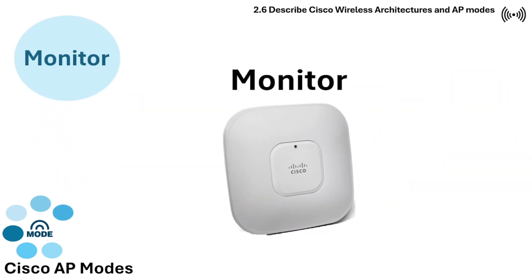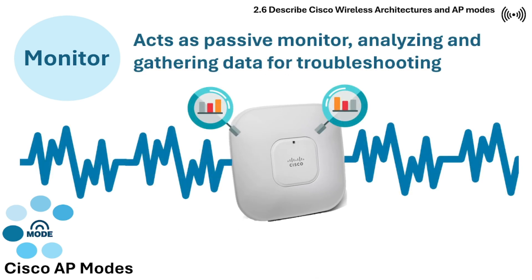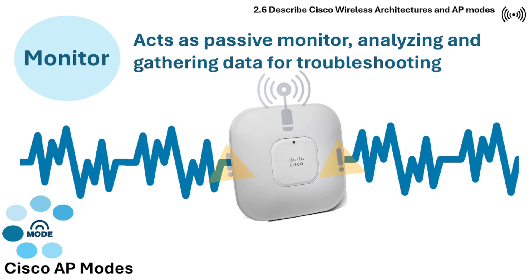Next are the network management and troubleshooting modes, starting with Monitor mode. The AP acts as a passive monitor, analyzing the wireless spectrum and gathering data for troubleshooting without serving clients. All AP models support this mode, and the APs act as sensors to monitor the WLAN for intrusion detection.